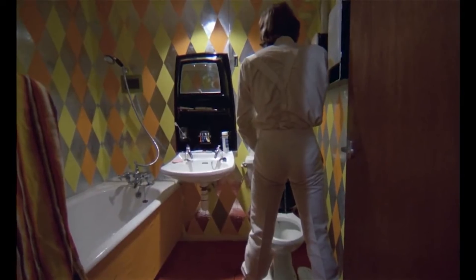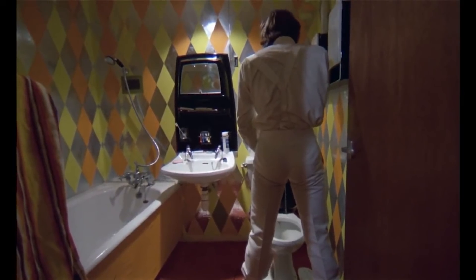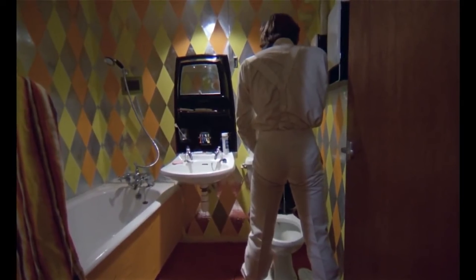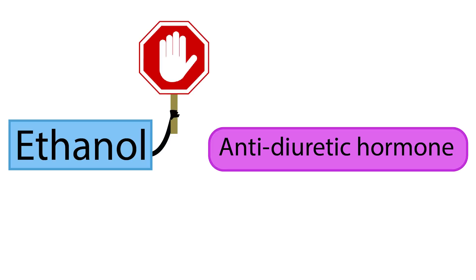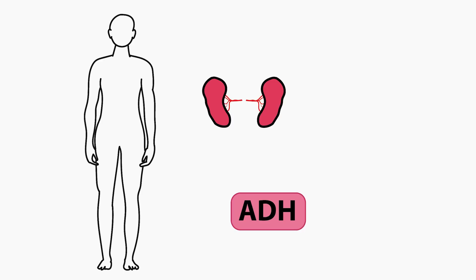You may have noticed after a few drinks that trips to the bathroom become more frequent. Among the many things that ethanol does to your body, one of them is inhibiting a hormone called anti-diuretic hormone, or ADH.